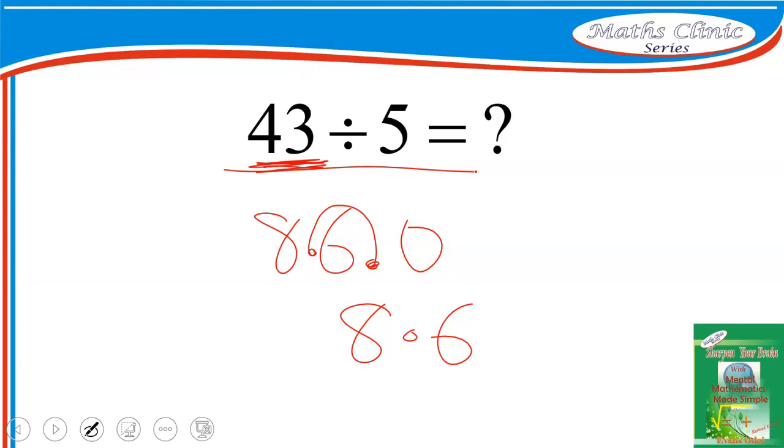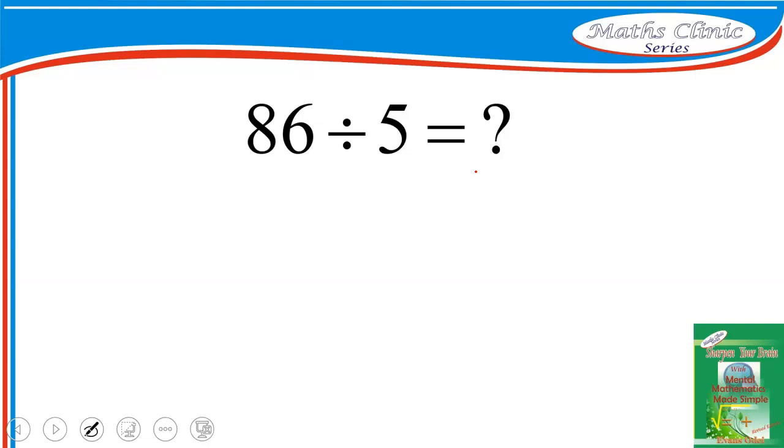Let's try another one. 86 divided by 5. For 86 divided by 5, just double 86. So mentally you can do this: 80 plus 80 is 160, 6 plus 6 is 12, so 160 plus 12 will give you 172.